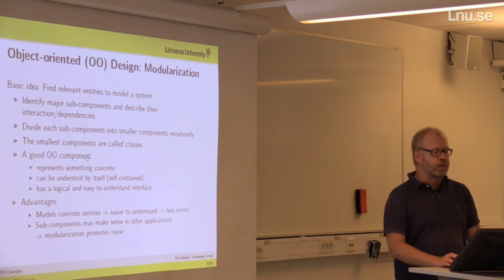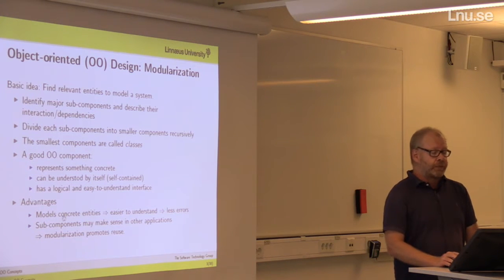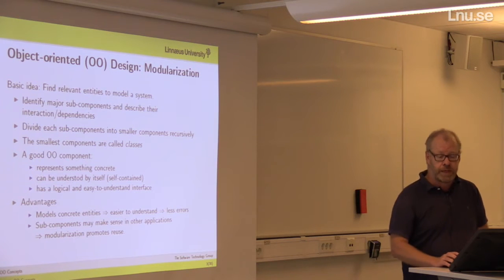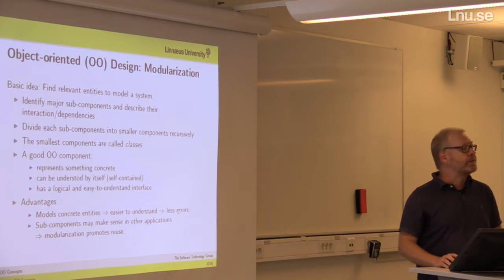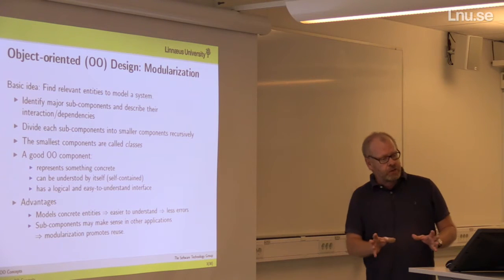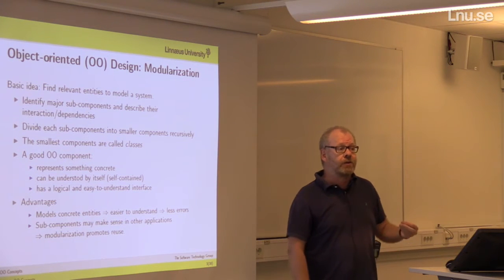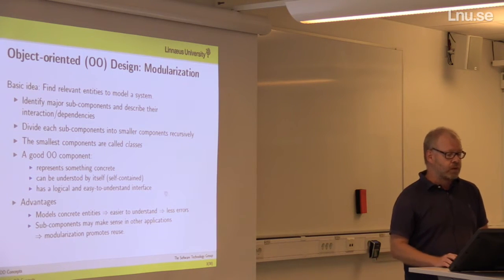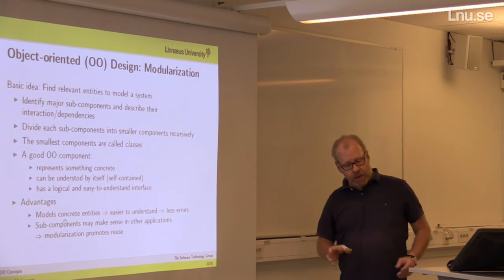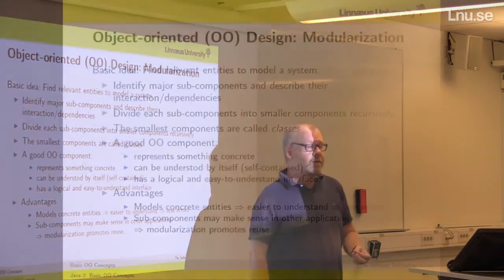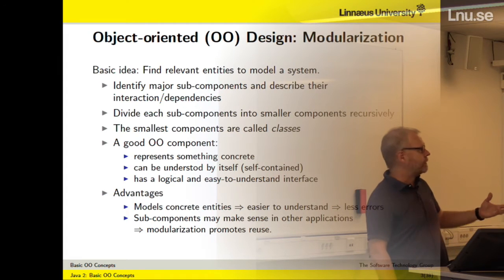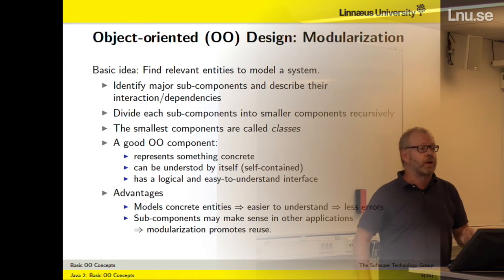If we find components that have these properties, the advantage is that if they are modeling concrete entities — something that we understand — then they are easy to understand, and things that are easy to understand come with fewer errors. Also, assume I'm developing a class that represents a student. I might find this class useful in many other applications, not only for one system but in all other systems that are related.